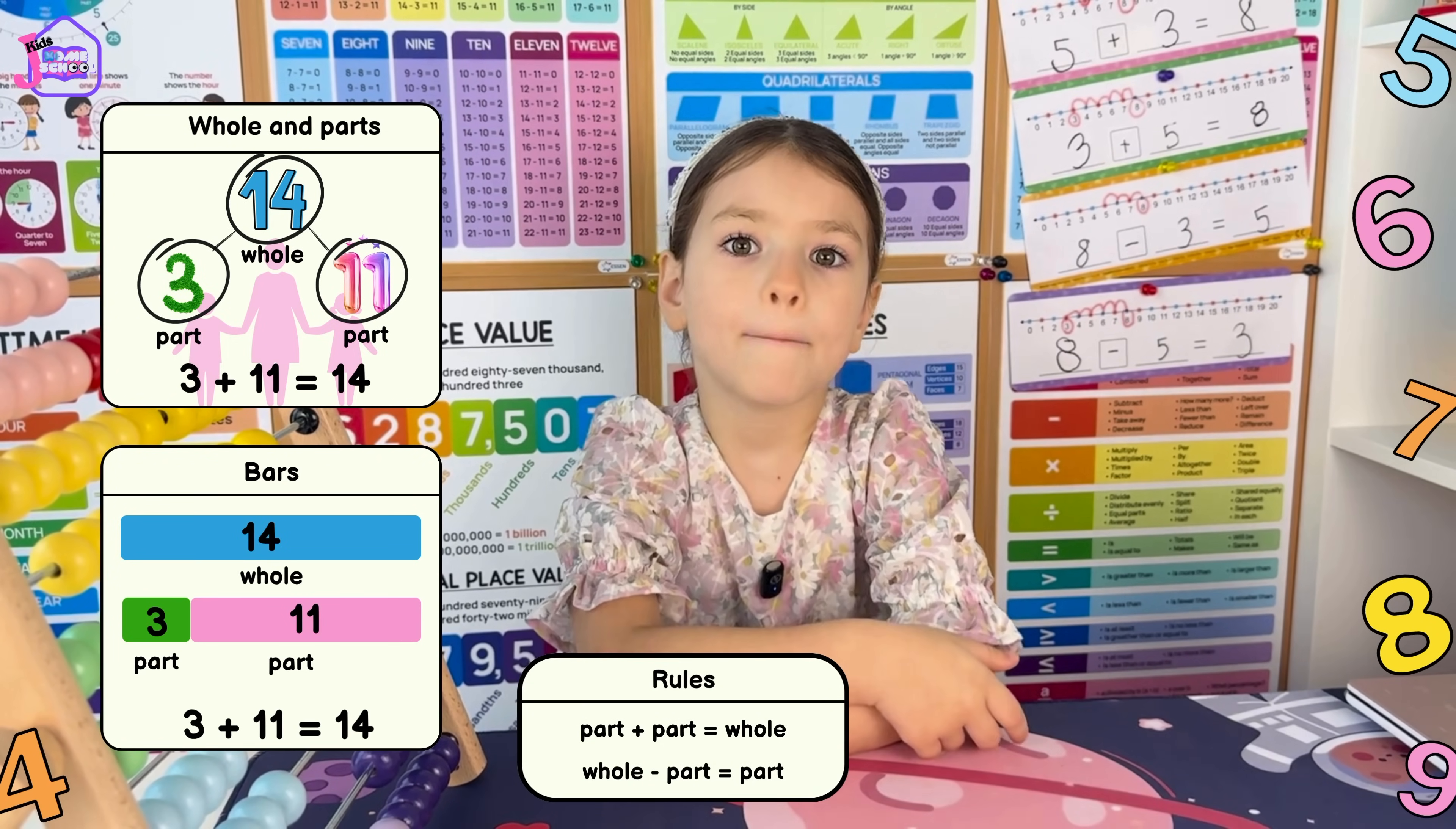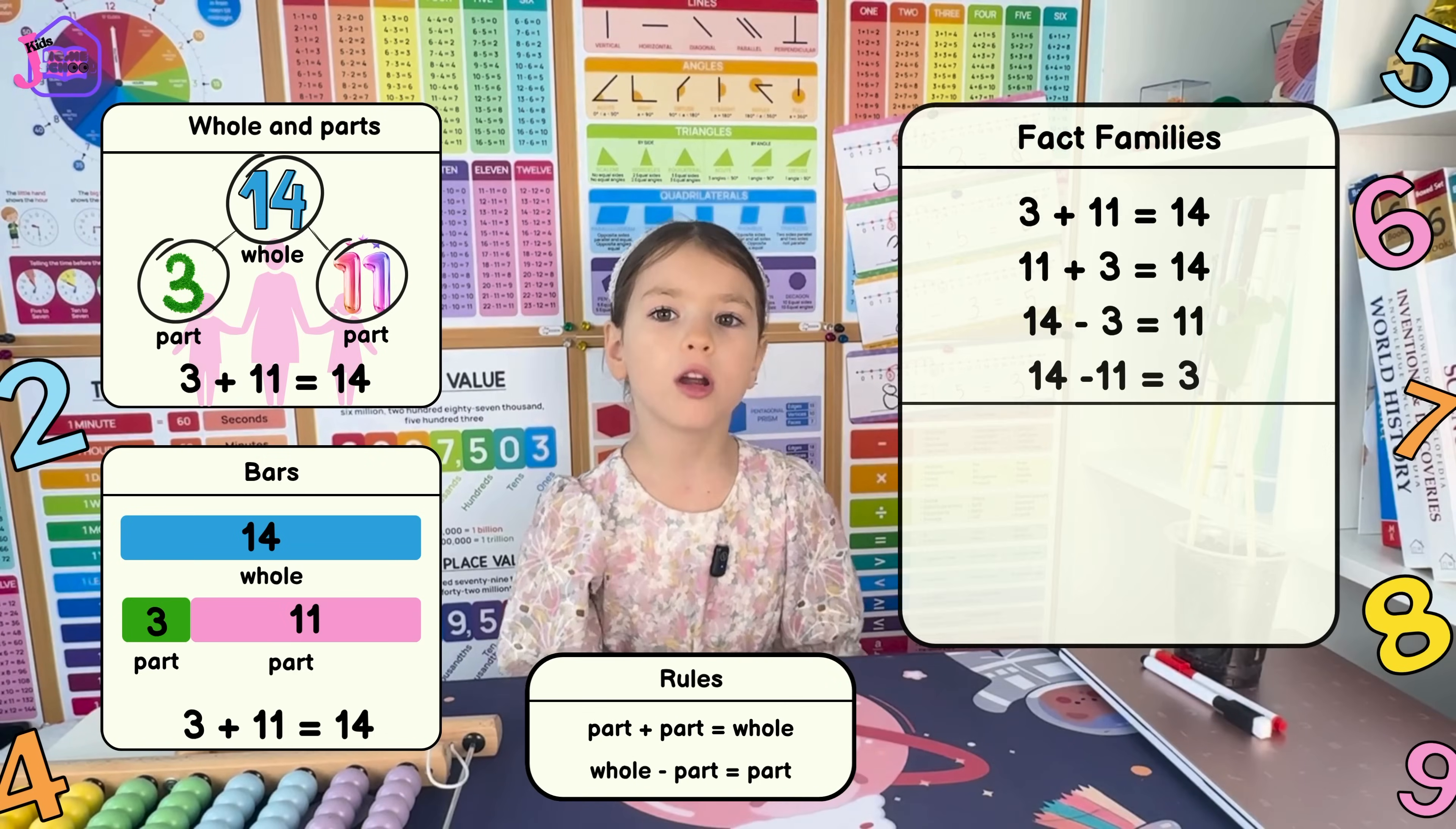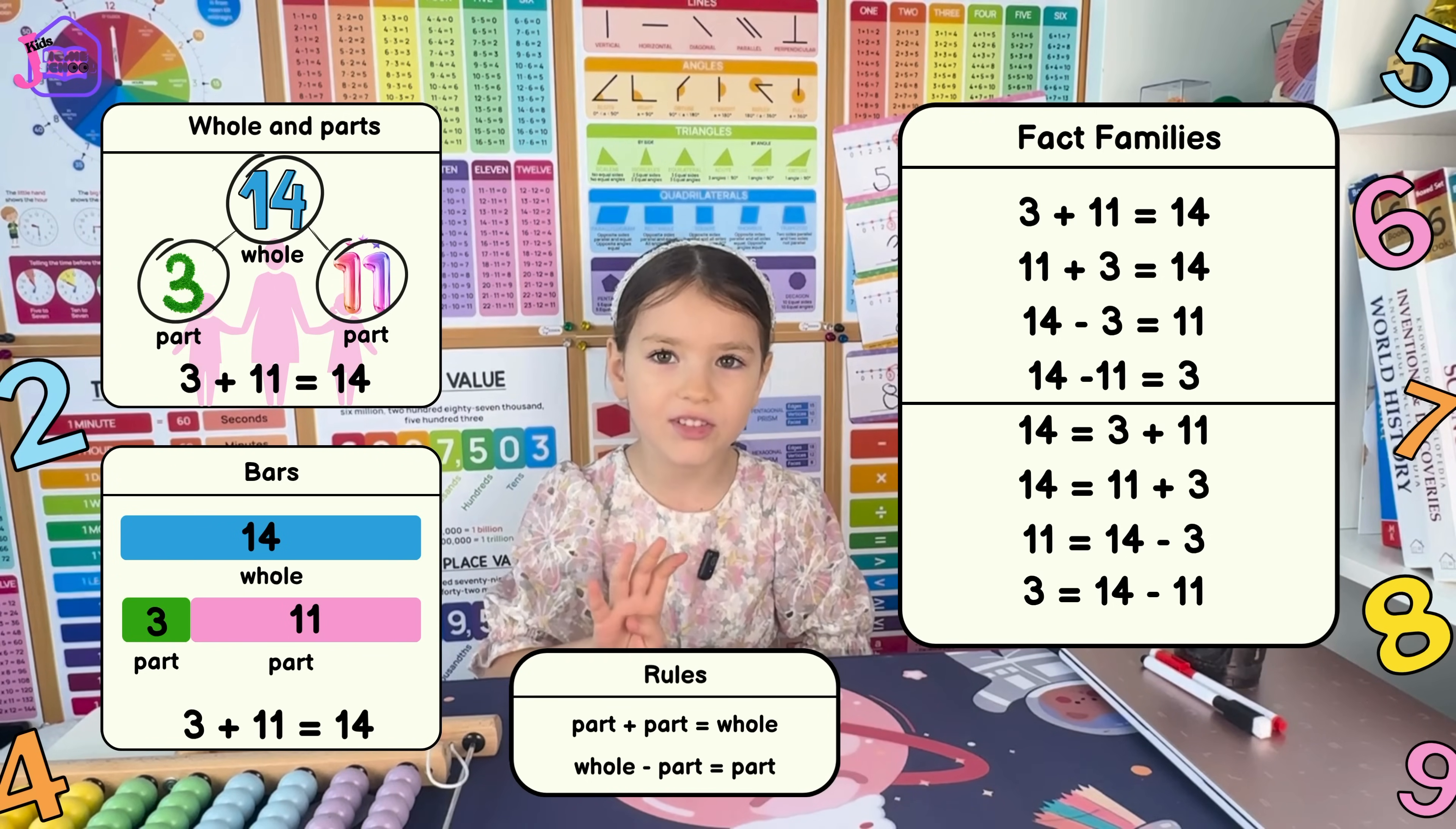Part plus part equals whole. Whole take away part equals part. We wrote down four family numbers using addition and subtractions. What if I tell you, you can write four more sentences.